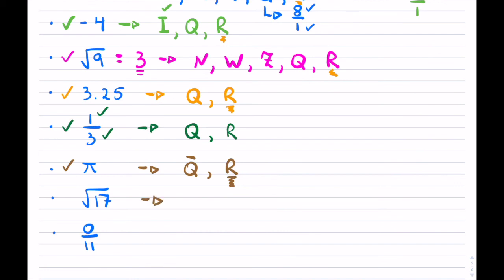The next one ties into irrational - the square root of 17. It is not a perfect square, and if it's not a perfect square, it is irrational, and again, just like the previous, it must be real.